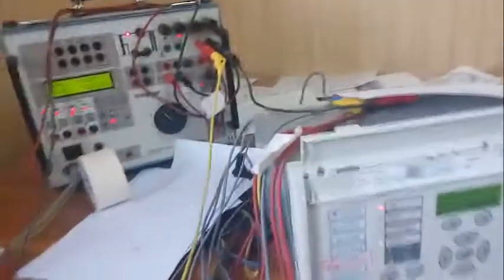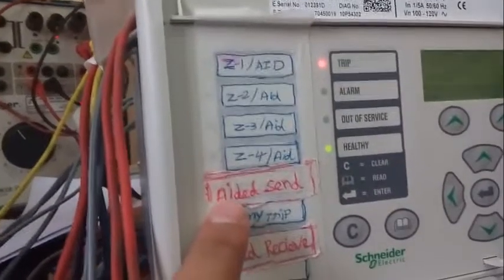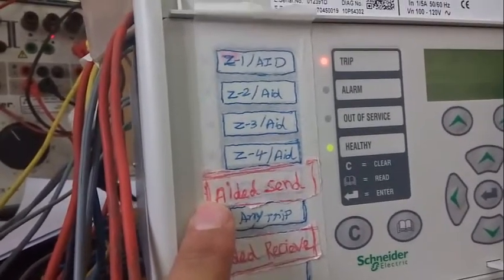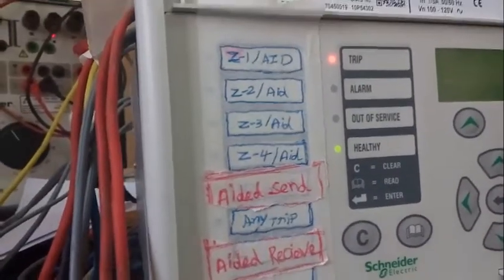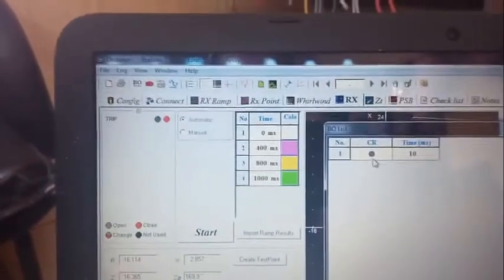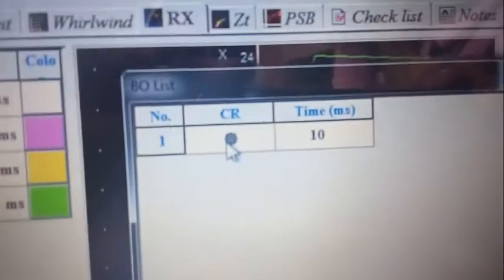With the Blocking scheme, when the relay detects a fault in zone four, it sends a signal and an LED glows, sending a command to the other relay that the fault is outside zone limits. The relay then takes the usual time to stop. For zone two, the relay will automatically accelerate. The carrier receive signal is disabled here, simulating no signal from the communication panel.